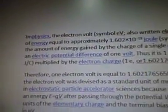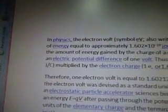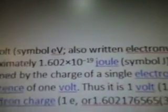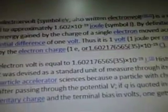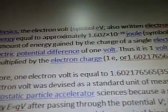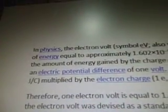So we're going to learn a bit about what an electron volt is. In physics, the electron volt is a unit of energy equal to approximately 1.602 times 10 to the minus 19 joules, symbol J. By definition, it is the amount of energy gained by the charge of a single electron moved across an electric potential difference of 1 volt.